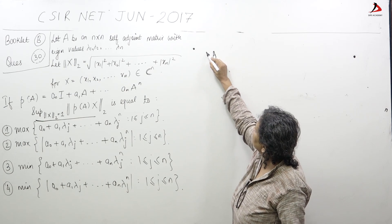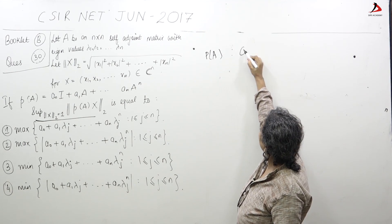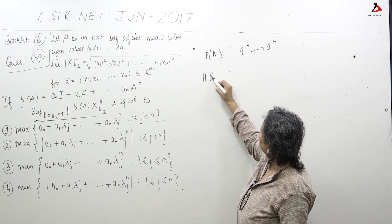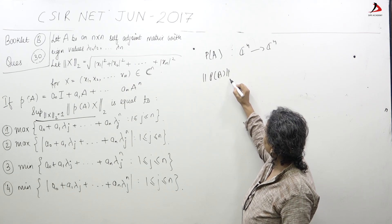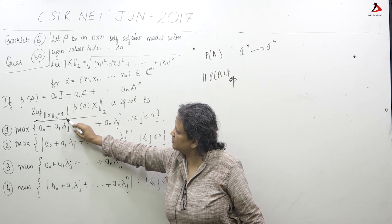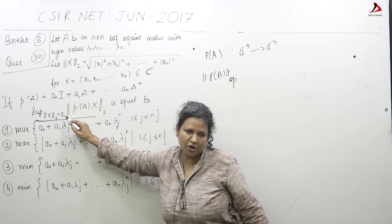A is a matrix, so P of A is a matrix. Because it is an n cross n matrix, it is a map from C n to C n. The operator norm of P of A is exactly this supremum of norm of P of A of x where x varies over norm x equal to 1.